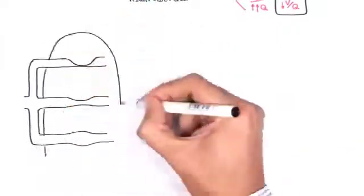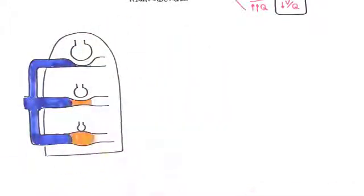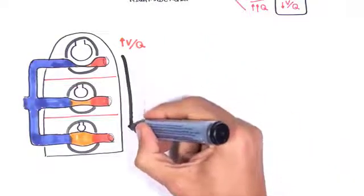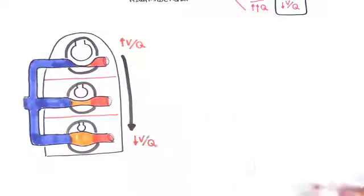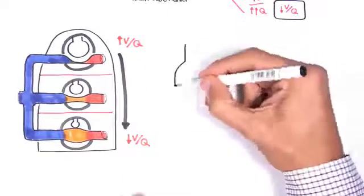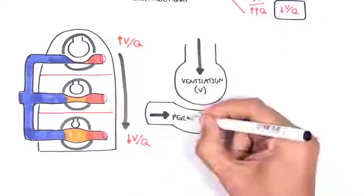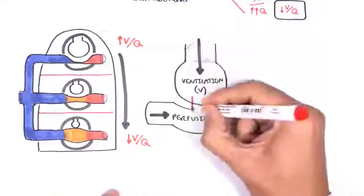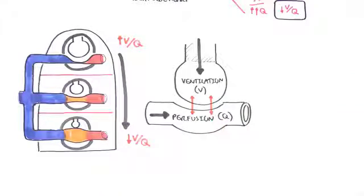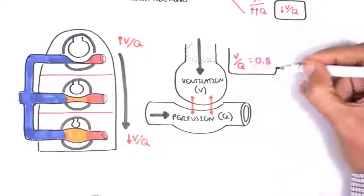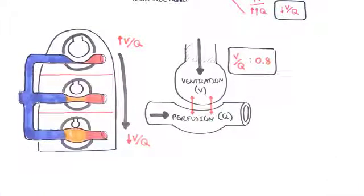A simple concept to understand is that the lung is divided into three zones. The ventilation-perfusion ratio is higher at the apex of the lung, at the top. Towards the base of the lung, the ventilation-perfusion ratio is decreased. The average ventilation-perfusion ratio is 0.8, meaning there is more perfusion — more blood flow to the lungs and alveoli — than there is ventilation.